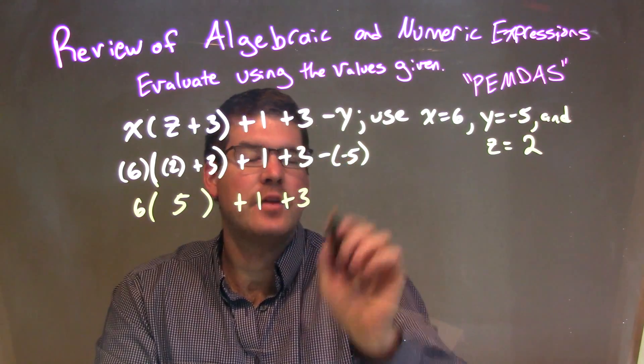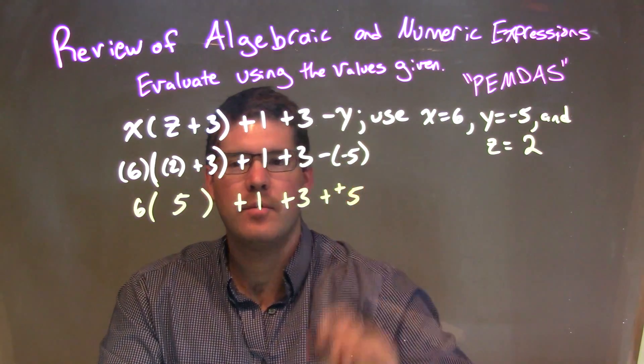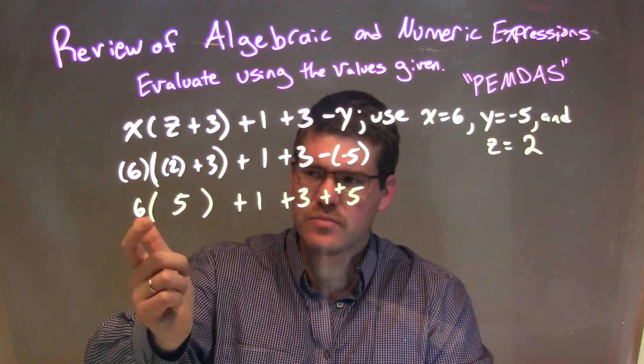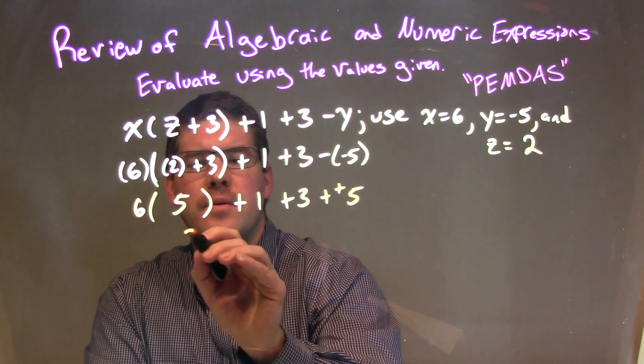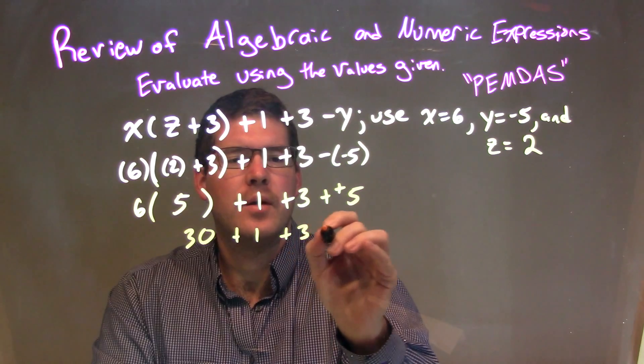Now, here we have a minus a negative 5. That's the same thing as adding a positive. So, I'm going to switch that here. Next up is multiplication. We have multiplication going on here, right? So, 6 times 5 is 30. Then, we have plus 1, plus 3, and then plus 5.